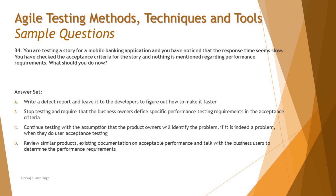Option C says: continue testing with the assumption that the product owner will identify the problem if it is indeed a problem during user acceptance testing. While continuing testing is fine, keeping observations as a surprise for the business is not recommended. You should always inform them of what you observe. The business can then define their priorities and decide whether they're fine with it. You should not let the business be surprised by unimplemented features at the end of the project during user acceptance testing.